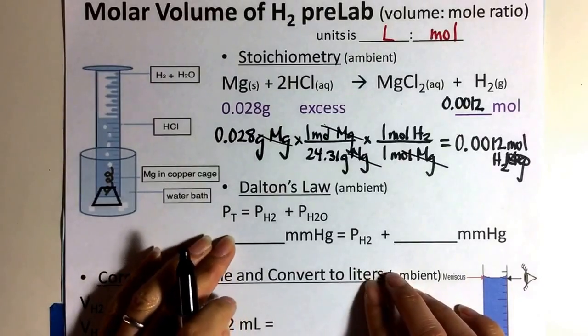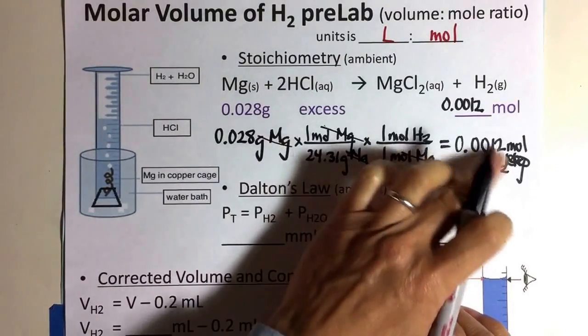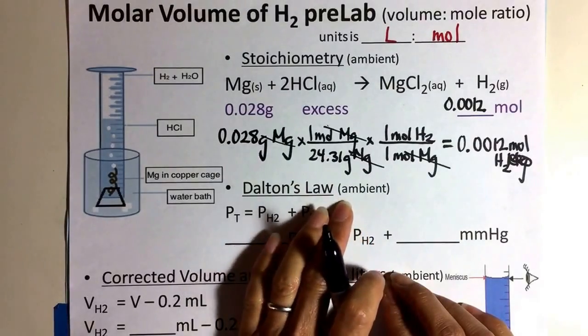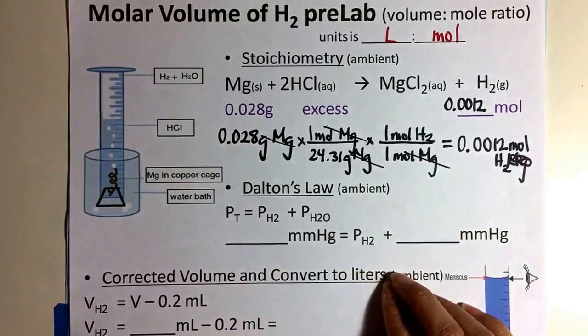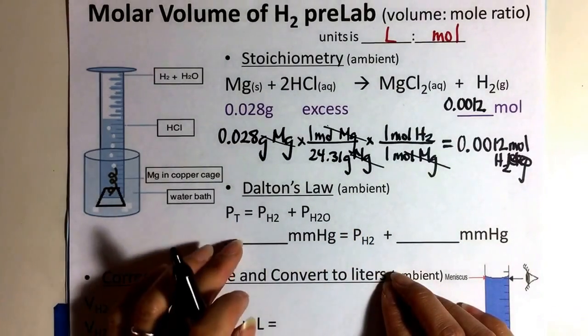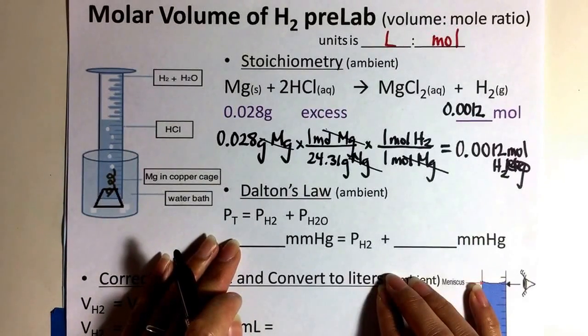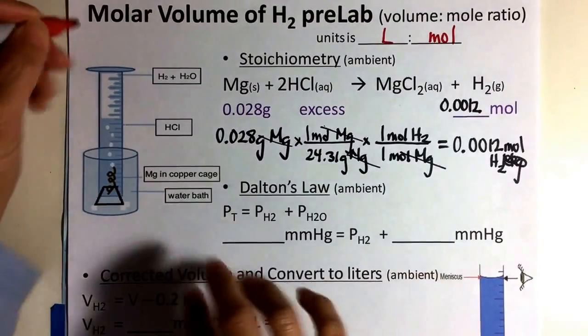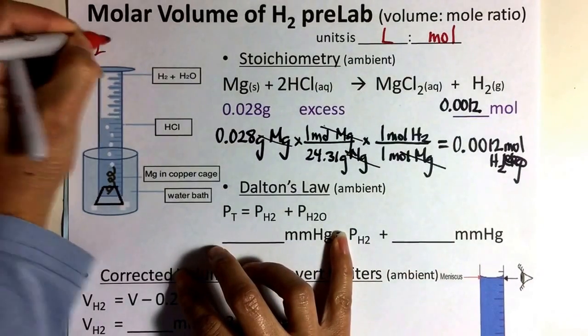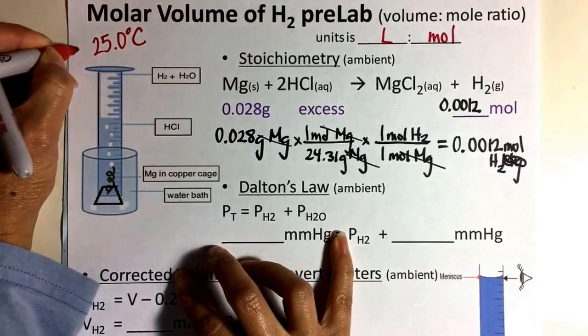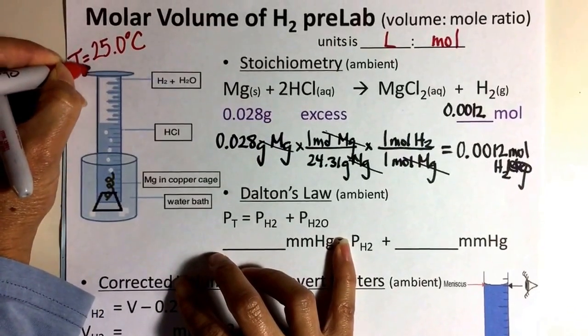Now in the problem, it tells you the ambient. By the way, this is the moles at ambient condition. We're also going to find the moles of hydrogen gas at ambient conditions as well. Ambient in this case is, for this problem, it doesn't tell you what the ambient temperature is. So I'm going to tell you right now, and you need to make sure you note it, that it's 25 degrees Celsius. That's the ambient temperature.